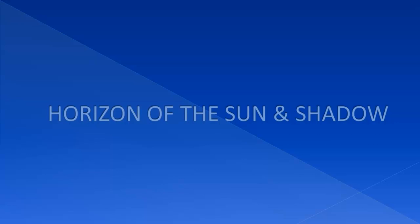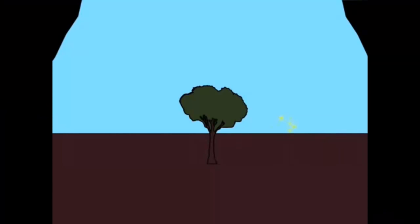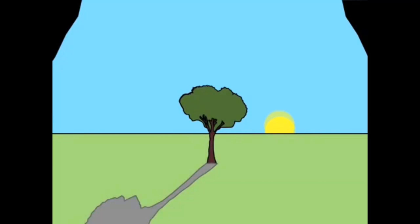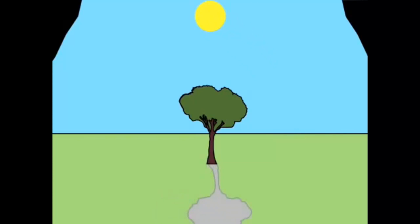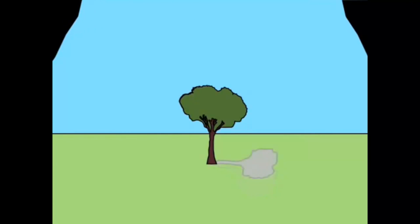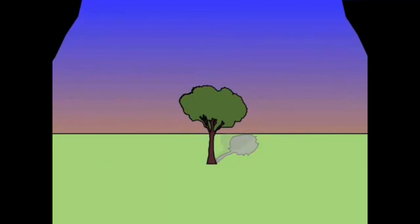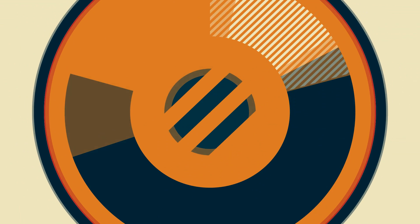Horizon of the Sun and shadow. You will realize that as the position of the Sun changes, the position of the shadow also changes. If the positions of sunrise and sunset on the horizon are observed over the whole year, you will realize that they keep on changing. This helps us to determine the time of day.